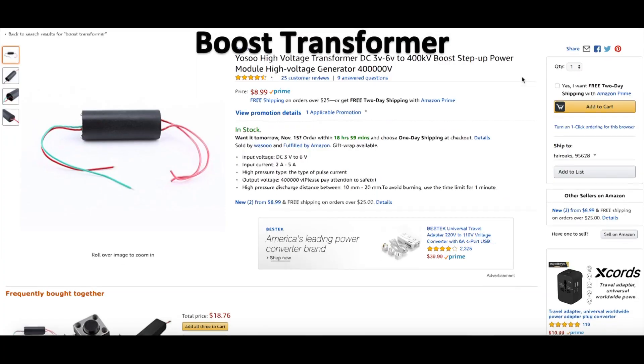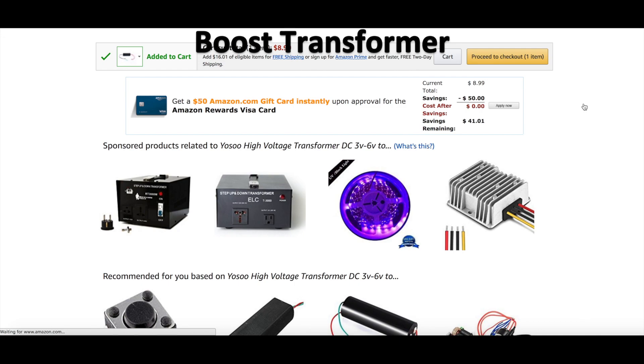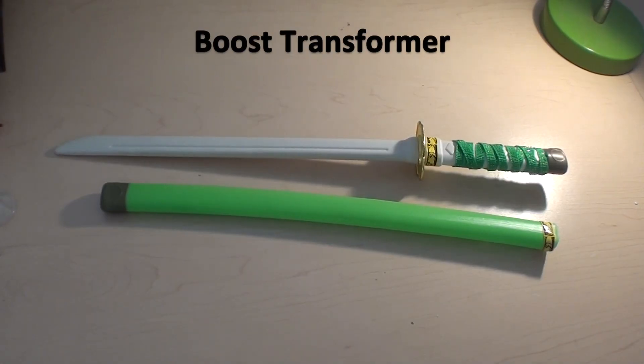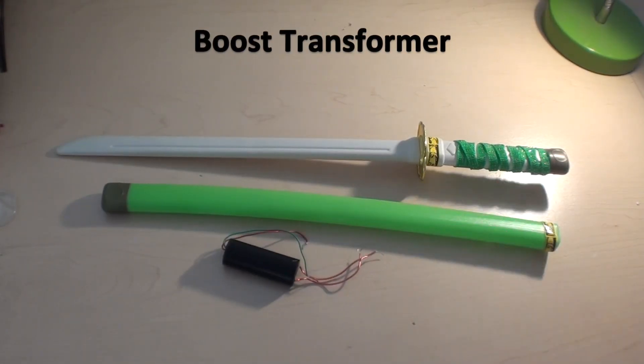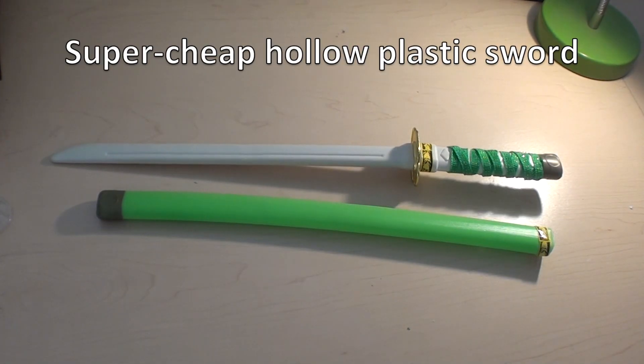Hey everyone, in this video we'll be making a powerful lightning sword out of just a few cheap parts. What we'll need is a high voltage boost transformer, which goes for about $8 on Amazon, a hollow plastic sword, and some random electronic components. Let's get started.